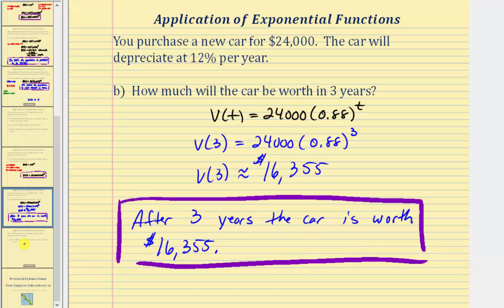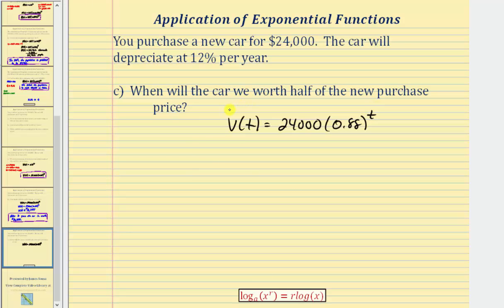And finally for our last question, we're asked to determine when the car will be worth half of the new purchase price. Well if the purchase price was $24,000, we want to determine the value of t when V of t would be equal to half of 24,000 or 12,000. So we want to solve the equation 12,000 equals 24,000 times 0.88 raised to the power of t.